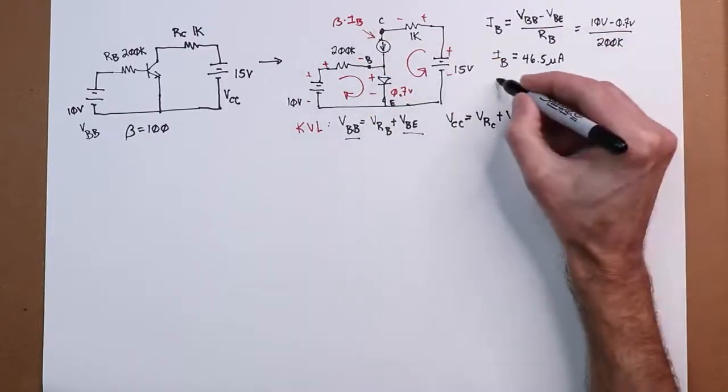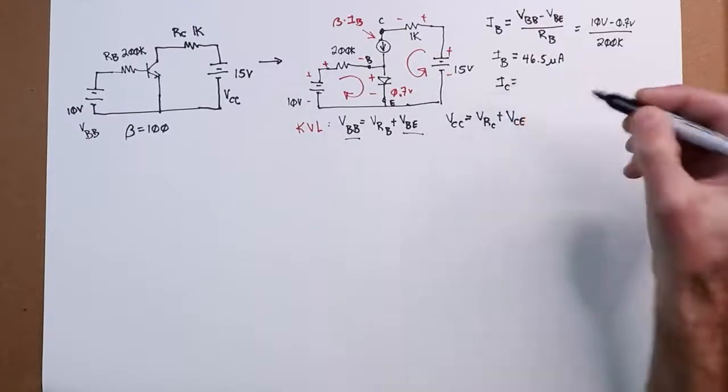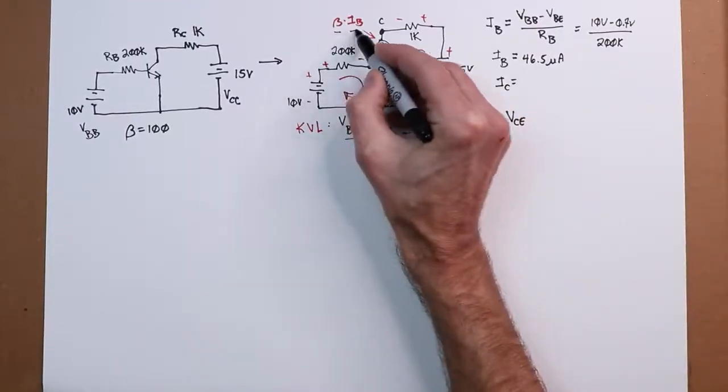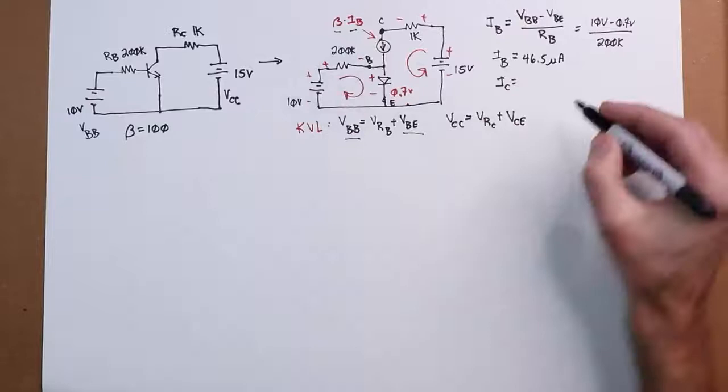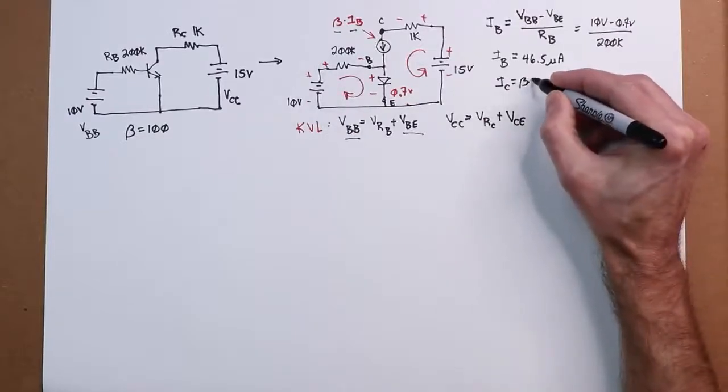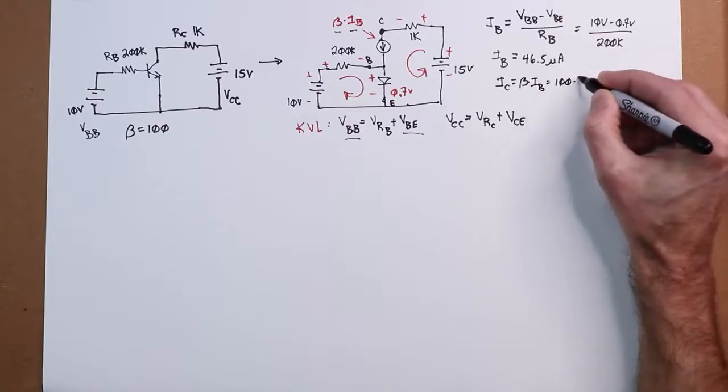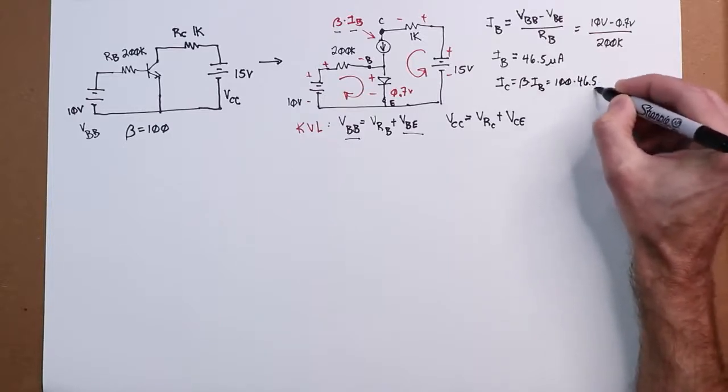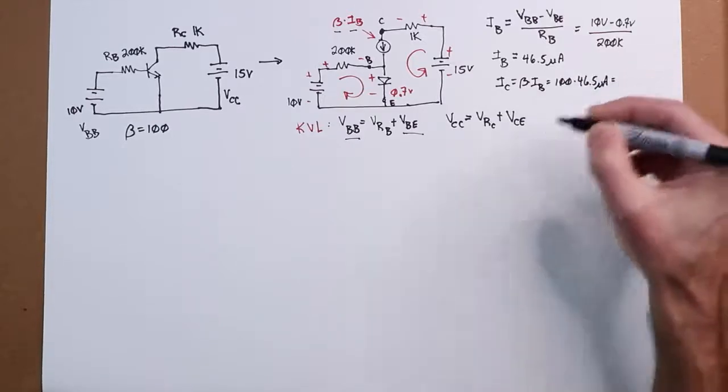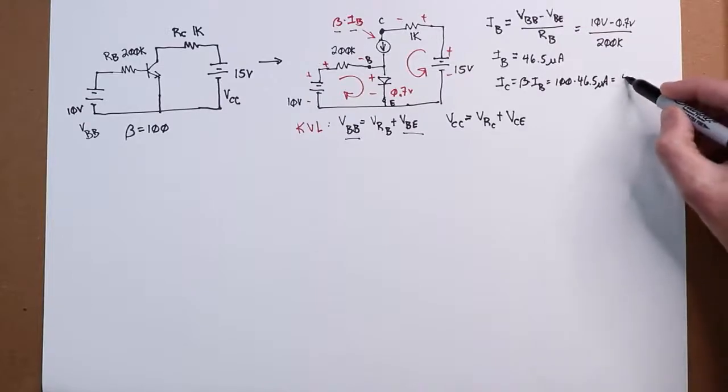Now the collector current is supposed to be beta times that, right? Beta times IB. So our beta is 100, 46.5 microamps, and that is going to give us 4.65 milliamps.